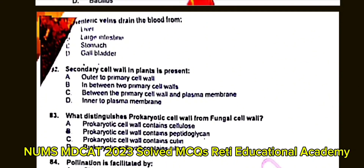Question number 82: Secondary cell wall in plants is present? A. Outside the primary cell wall. B. In between two primary cell walls. C. Between primary cell wall and plasma membrane. D. Inner to plasma membrane. The correct answer is C: Between primary cell wall and plasma membrane.